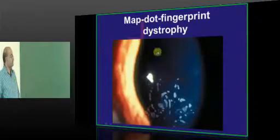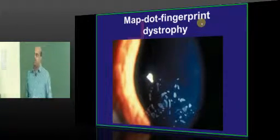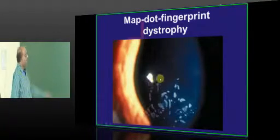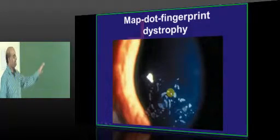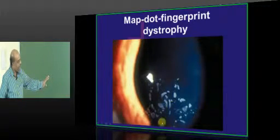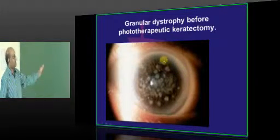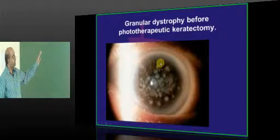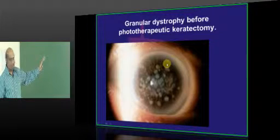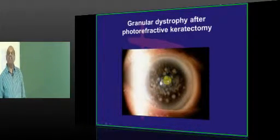This is how a cornea with dystrophy looks. There are a few varieties of corneal dystrophies — their names are a little annoying. First, let me go through how they look. This is called map dot fingerprint corneal dystrophy. This is a granular dystrophy — before and after phototherapeutic keratectomy, though there wasn't much visible difference.